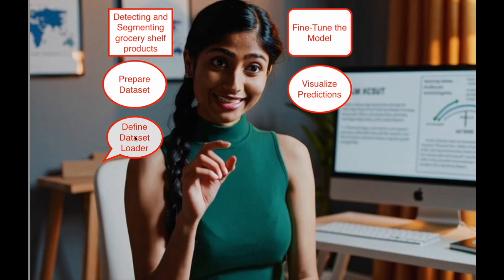Step 3: Define dataset loader. The custom dataset loader, implemented as a PyTorch dataset class, handles loading images, annotations, and generating masks. It reads image files and their associated bounding boxes, ensuring proper alignment between annotations and images. Masks are created for each bounding box by overlaying binary masks on the image dimensions, representing object regions. Transformations like converting images to tensors are applied to standardize inputs. A data loader is then used to batch and shuffle the data, optimizing it for model training, and ensuring compatibility with the Mask-RCNN model.